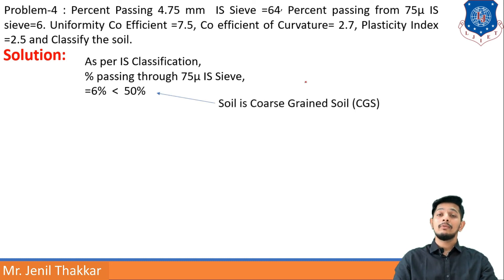As per IS classification, percentage passing through 75 micron IS sieve is 6%, which is less than 50%. So first of all, according to IS classification table, we got the idea that this is coarse grain soil.